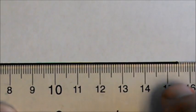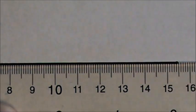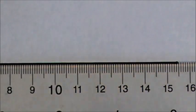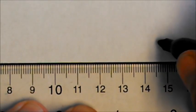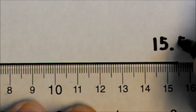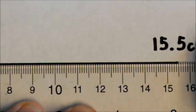15. So this would be 15, 1, 2, 3, 4, 5. So that's 15.5 centimeters. So this line, as we see it, it would be 15.5 centimeters.